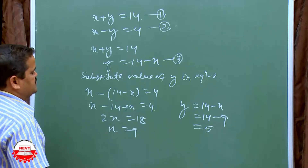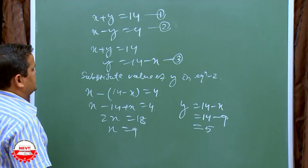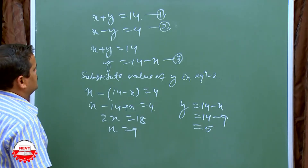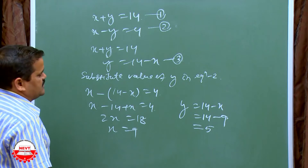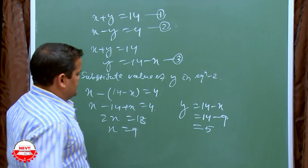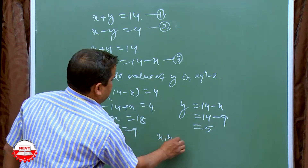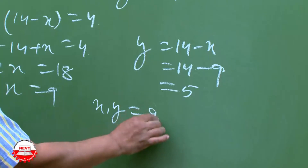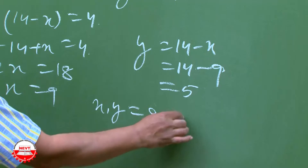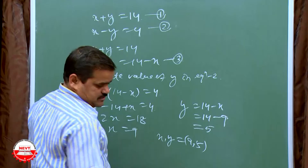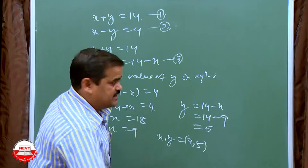So Y is equal to 5 and X is equal to 9. We can verify: X minus Y is equal to 9 minus 5, which equals 4. That checks out.